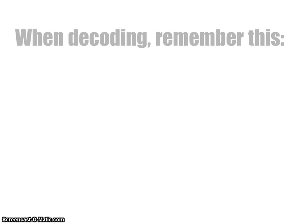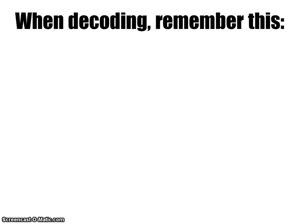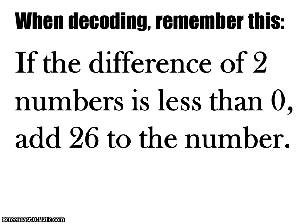The following rule is a very important rule when using the Vigenère cipher. If the difference of the two numbers is less than 0, then you need to add 26 to the number. This is true because there's 26 letters in the alphabet, and it would just cycle back around to the same letter.